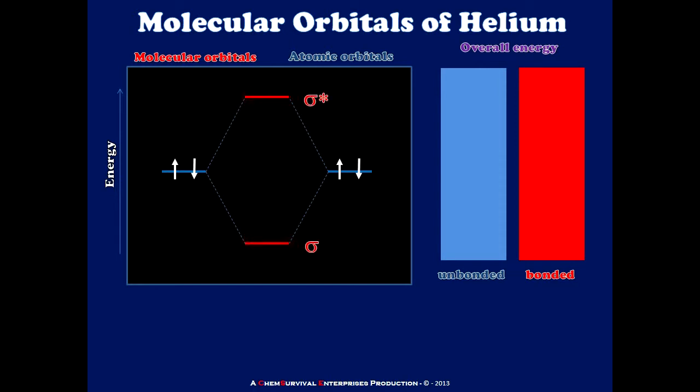There's my sigma and my sigma star molecular orbitals. But now, if I populate them following Hund's rule and the Pauli exclusion principle, going from lowest energy to highest, what I notice is that while I place two electrons into a bonding orbital, I am forced to place my other two electrons in the higher energy antibonding orbital, cancelling out the energetic benefit.